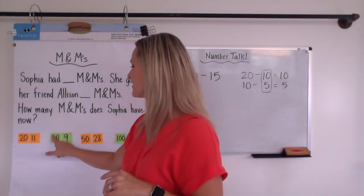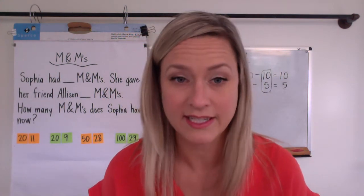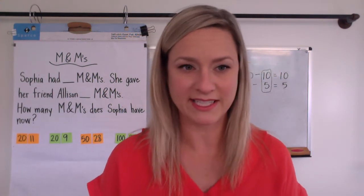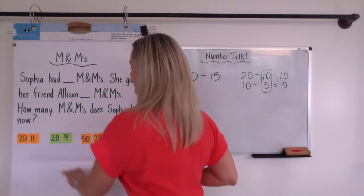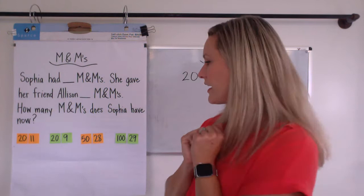So maybe you noticed every single one of these is a multiple of 10. So you would say them if you count by 10: 10, 20, 30, 40, 50, 20, 50, 100. All right. So let's choose our just right number set.